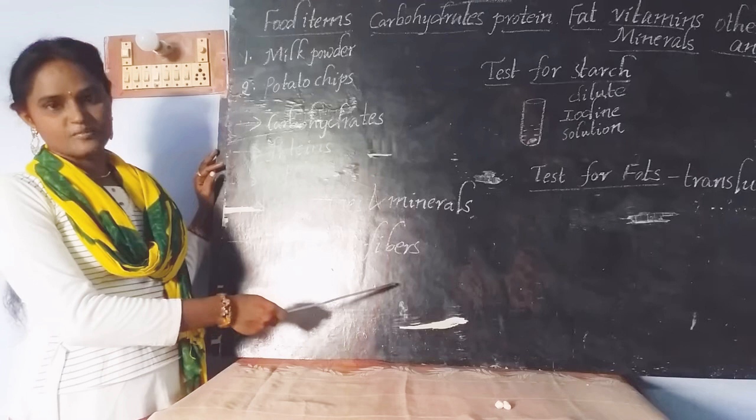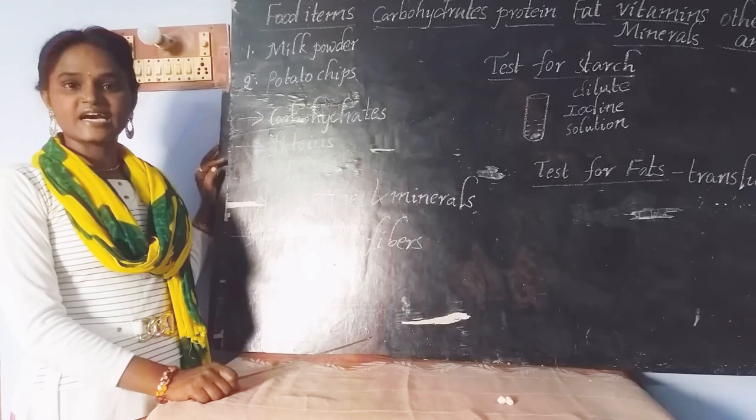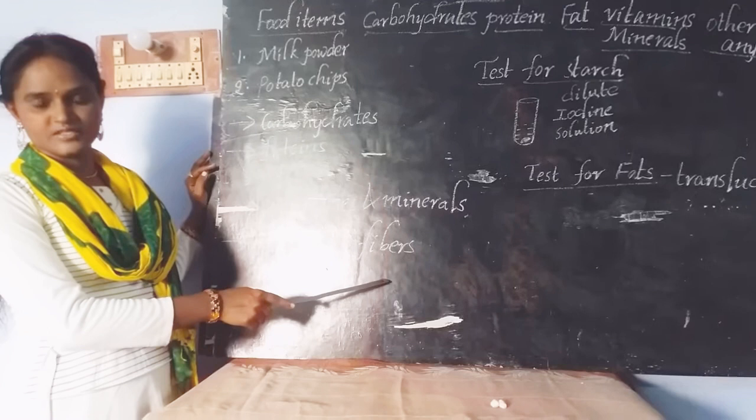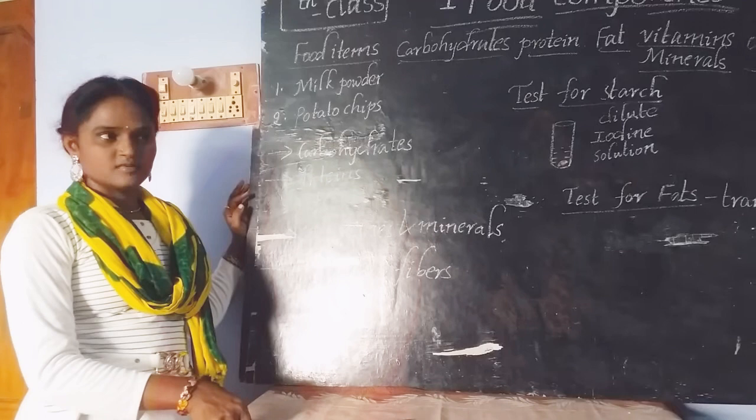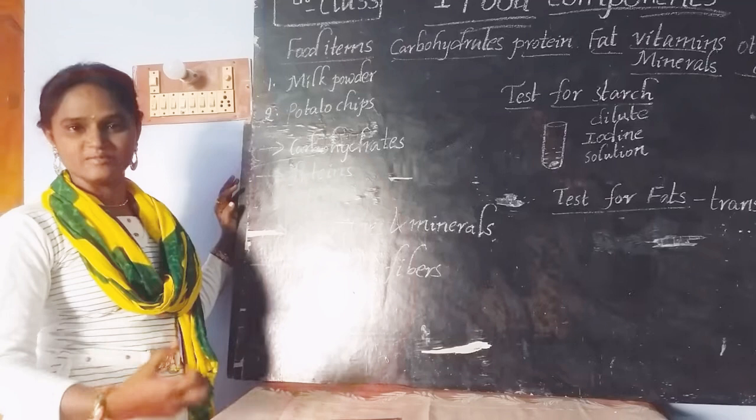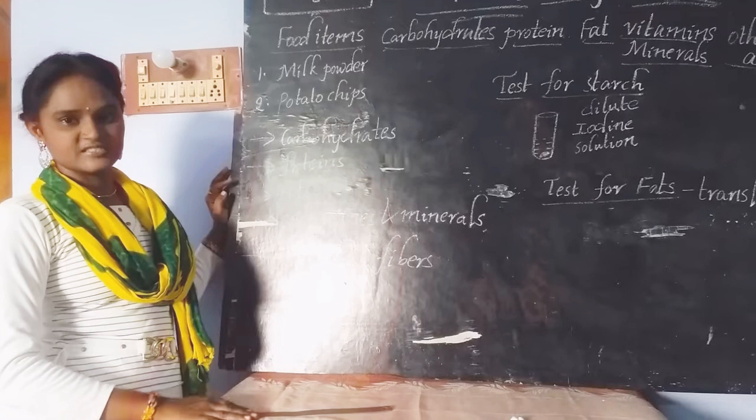These fibers are also called as roughages. A balanced diet may contain all these nutrients along with water and fibers, which help give a healthy body. A person who looks healthy has to eat all these nutrients. If you have interest to become a healthy person, then you have to eat all these nutrients by consuming different varieties of food.